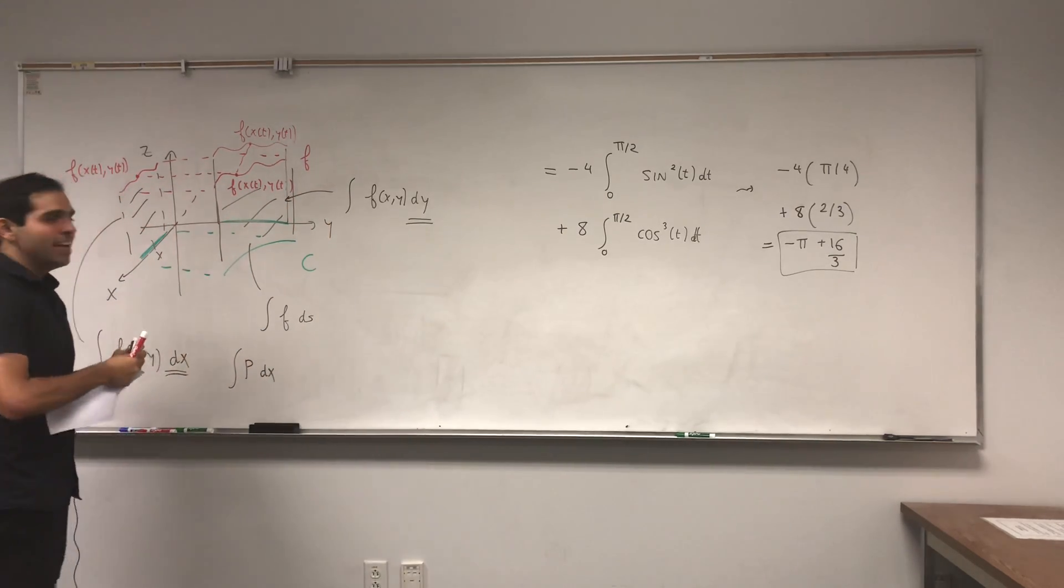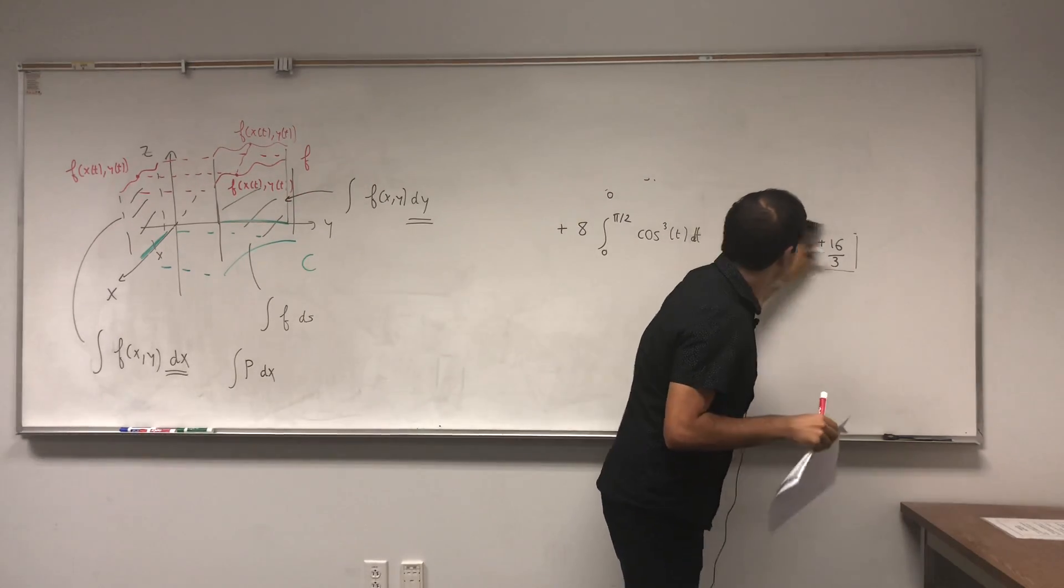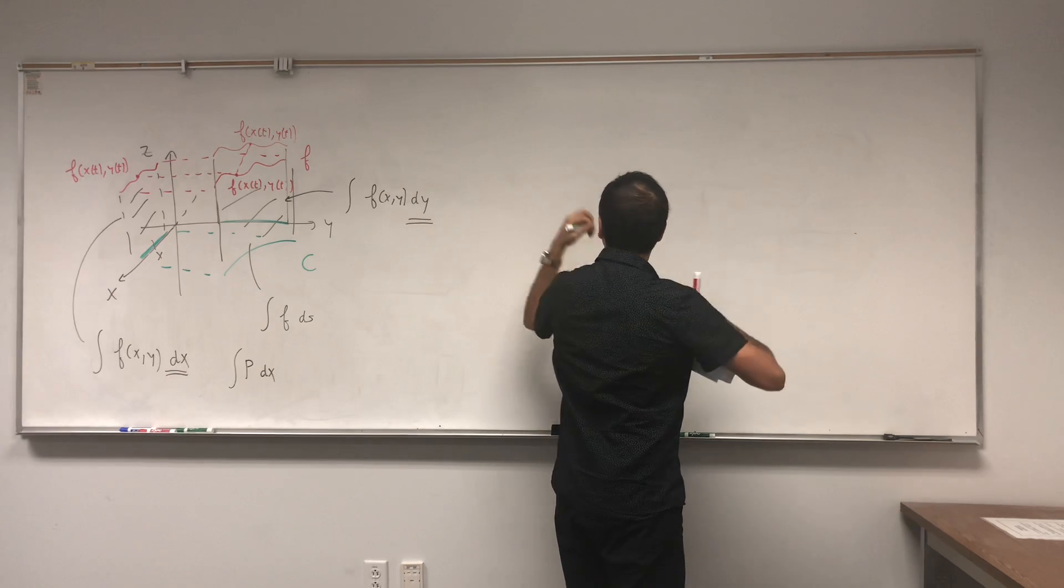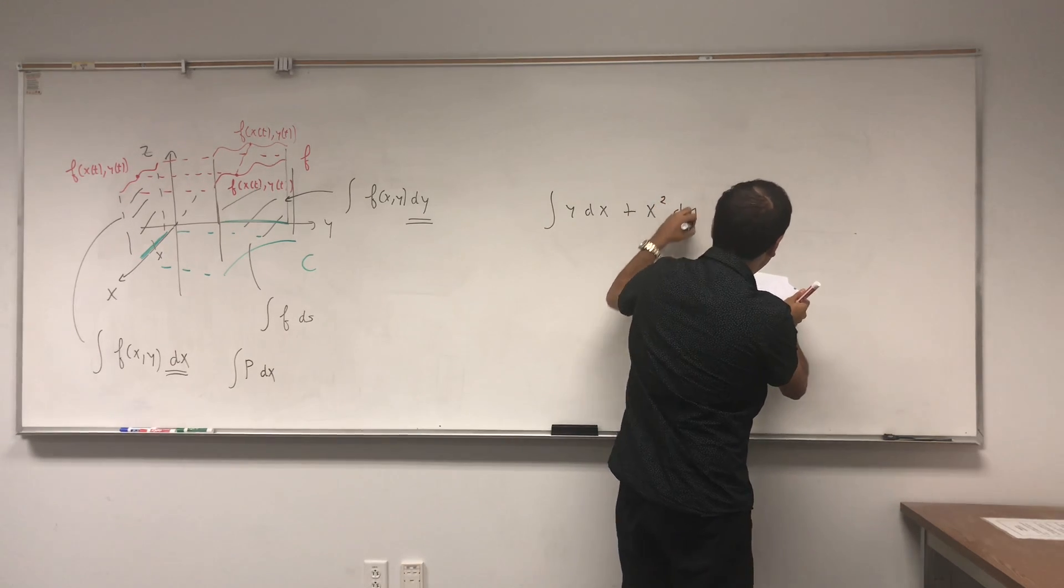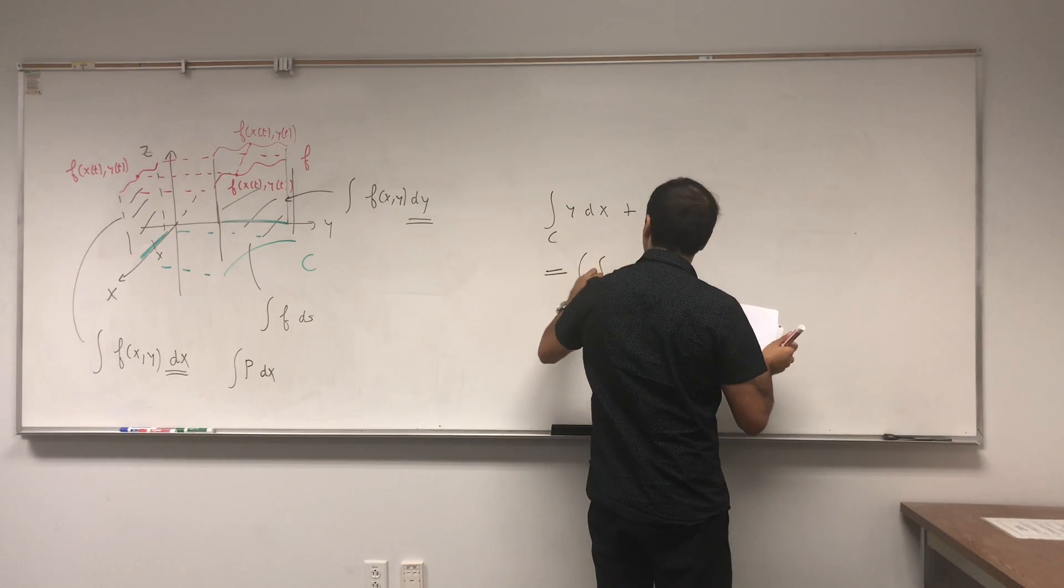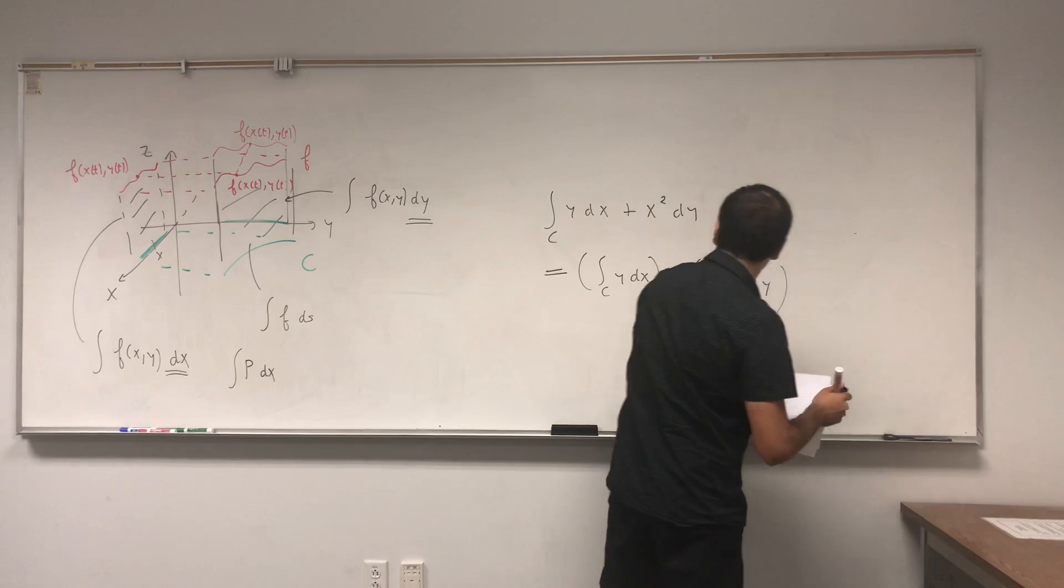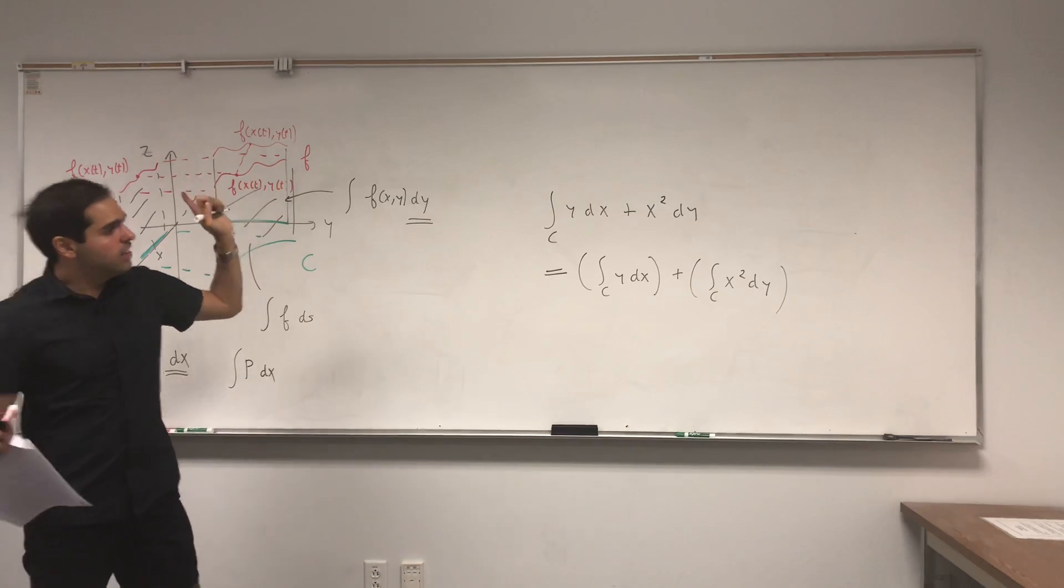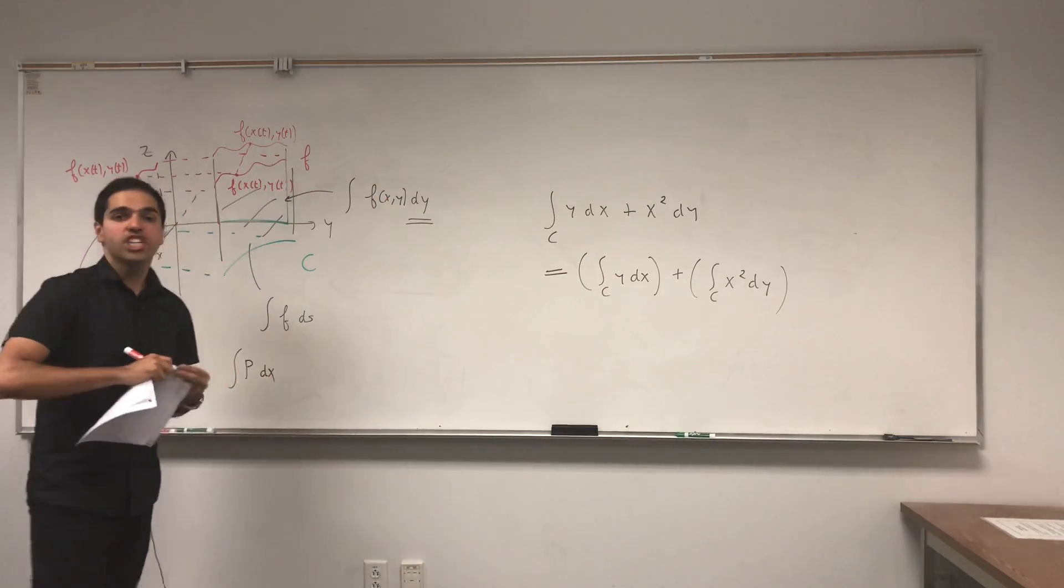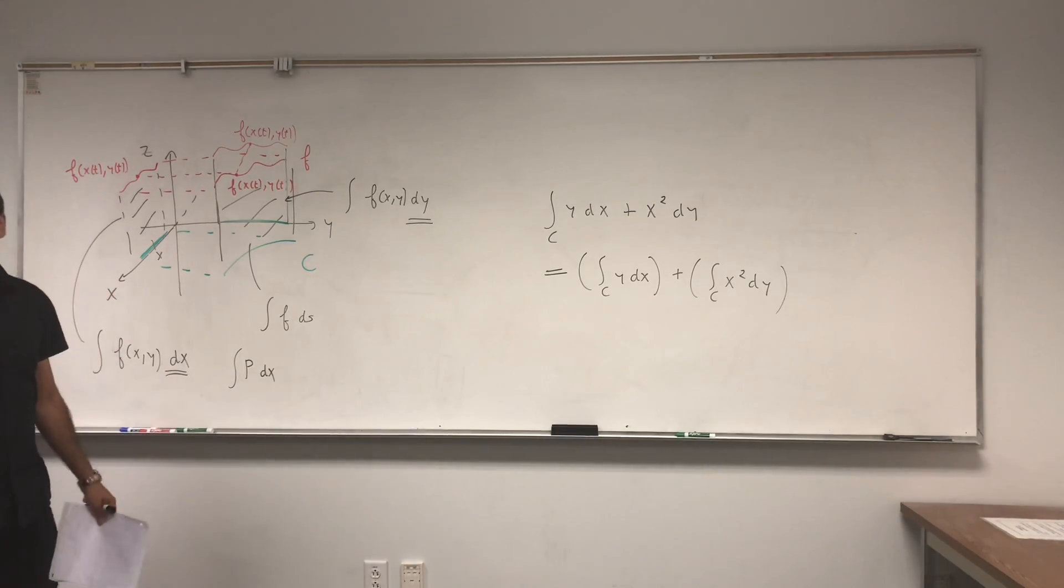So you see, same height but different base. And this area would be integral of f of (x, y) dy. So here it's integral of f with respect to x, integral of f with respect to y, and essentially what we did today we just combine the two. So what this weird symbol is, integral of y dx plus x squared dy, that's really the line integral of y dx plus the line integral of x squared dy.